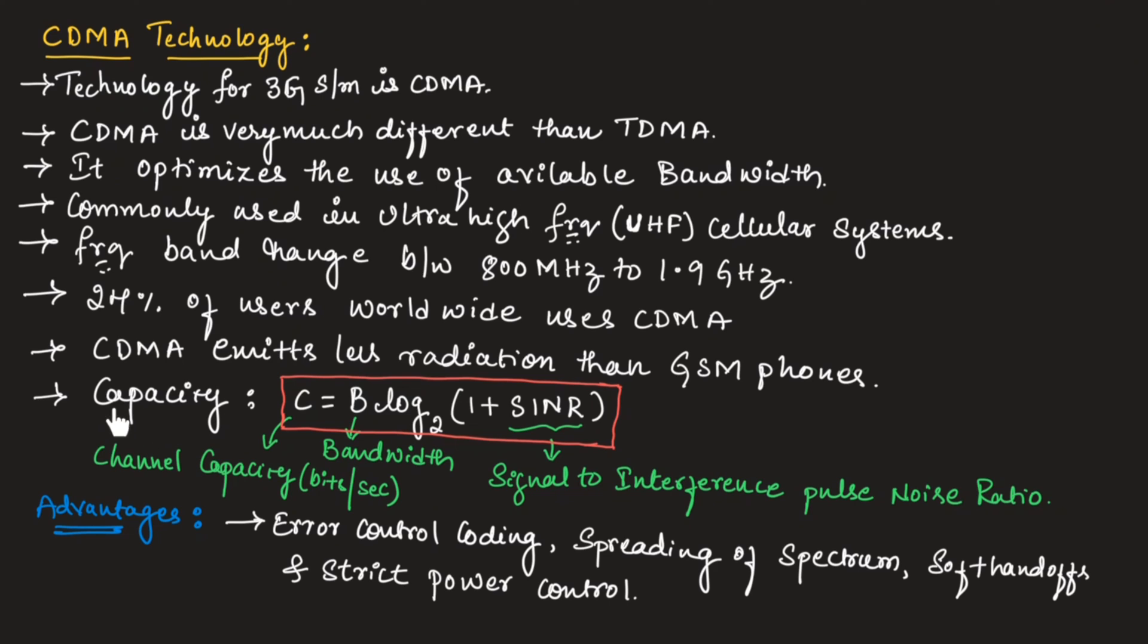Here channel capacity is very important. The capacity of mobile telecommunication system in CDMA technology can be given as C equals B log to base 2 of 1 plus SINR. Here C represents channel capacity measured in bits per second, B represents bandwidth, and SINR represents signal to interference plus noise ratio.